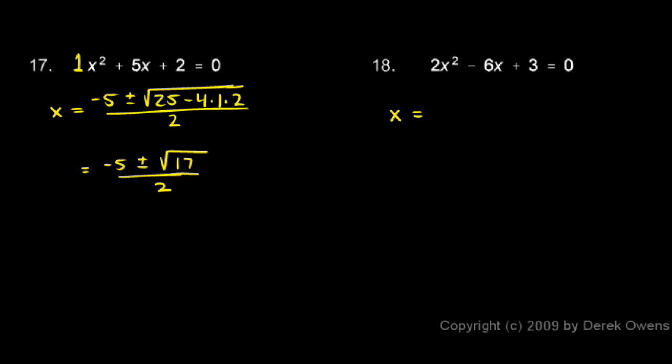So x is equal to negative b, which will be a positive 6, plus or minus the square root of 36 minus 4 times 2 times 3, all over 2a.